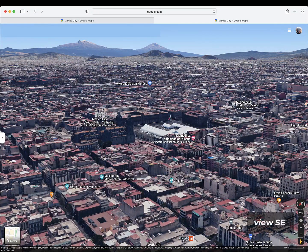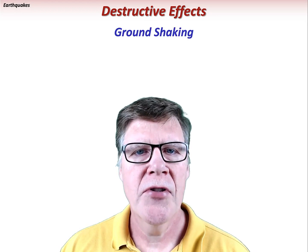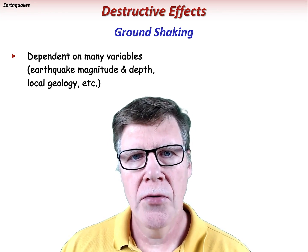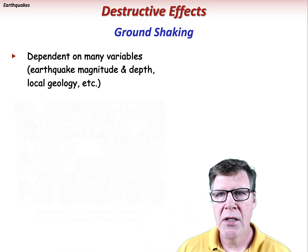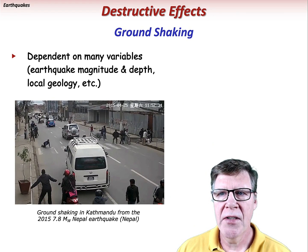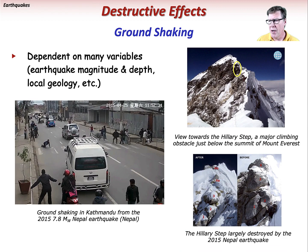About 60 kilometers to the southeast of Mexico City is the active 17,802-foot Popocatépetl stratovolcano and its dormant sibling, Iztaccíhuatl. The degree of ground shaking during an earthquake depends on many variables including magnitude, distance, depth to focus, and local geology. The 2015 7.8 magnitude Nepal earthquake not only shook populated areas but also affected remote areas in the Himalaya — the famous Hillary Step just below the summit of Mount Everest was largely destroyed by this event, having always been seen as a last challenge before summiting.